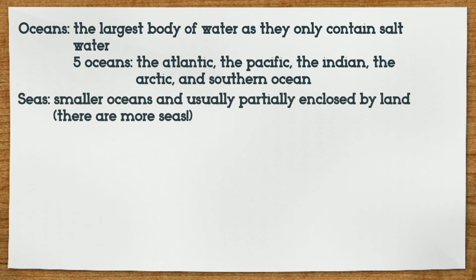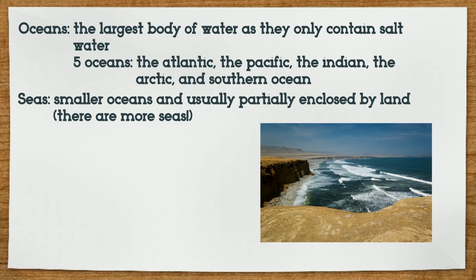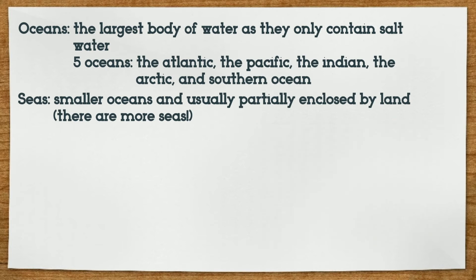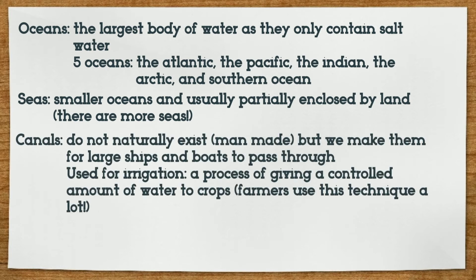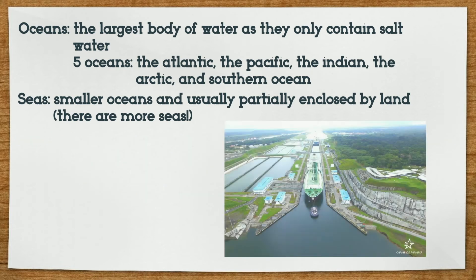Seas are similar to oceans, but are smaller and are usually partially enclosed by land. People usually say that there are seven seas in the world, but in reality there are much more seas. Canals are special because they are man-made. Canals do not naturally exist, but we make them for large ships and boats to pass through. They are also used for irrigation, which is a process of giving a controlled amount of water to crops. Farmers use this technique a lot.